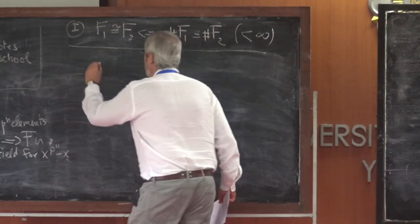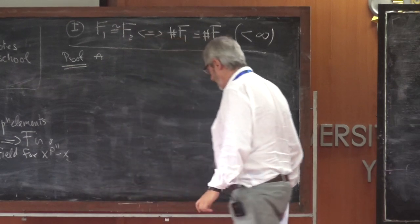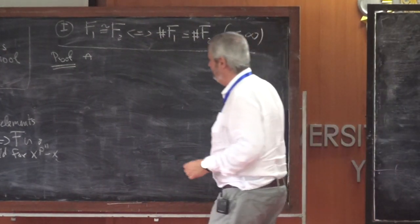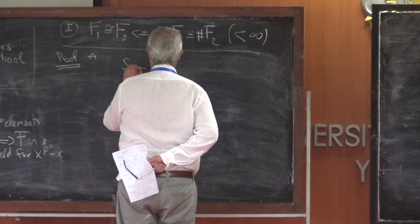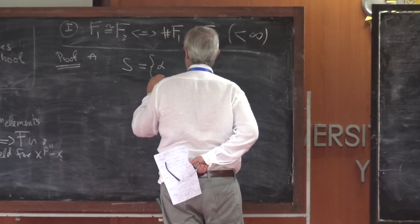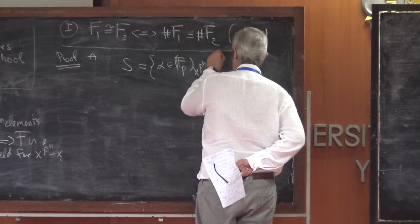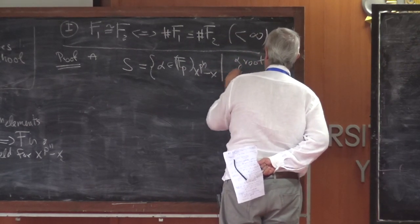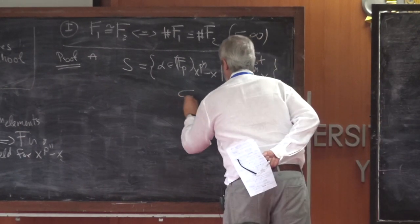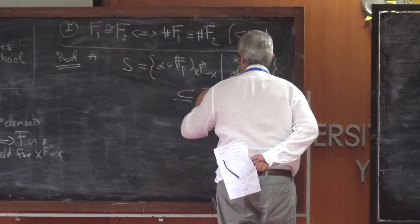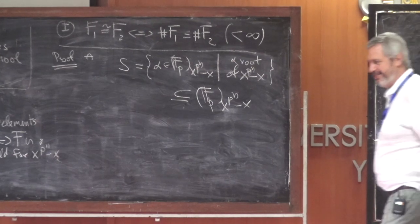Let's prove task A. Let S be the set of roots — that is, elements alpha of the splitting field which are roots of the polynomial x^(p^n) - x. This is of course a subset of the splitting field itself.